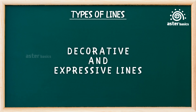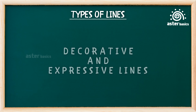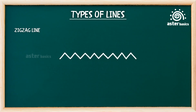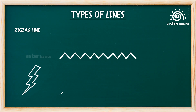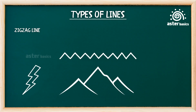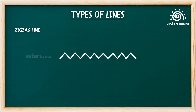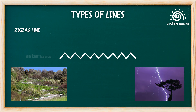Decorative and expressive lines. Zigzag line: sharp, angled turns that go up and down like a mountain range. Used to draw lightning bolts, mountains, and energetic drawings. This line loves to dance in fast, pointy steps — zig, zag, zig, zag. It's like a mountain trail or a bolt of lightning zooming across the sky.